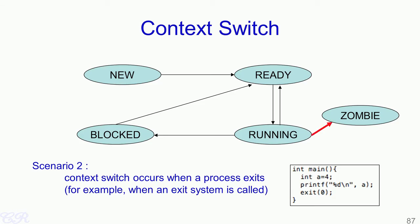In the second scenario, consider a program with a printf followed by an exit. The exit is a system call which results in the process going into the zombie state. At the end of the exit system call, the operating system triggers a context switch, ensuring the exiting process no longer holds CPU resources. A new process is then assigned the CPU, moving from the ready state into the running state.